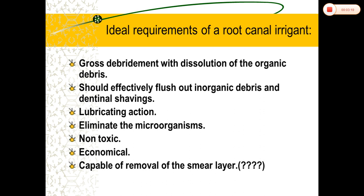It should be easy to use and have an adequate shelf life for storage, which also contributes to it being economical. In addition, it should be non-toxic and non-caustic to the periodontal tissues, and have little potential to cause any anaphylactic reaction. These are the main ideal and additional requirements to be an efficient root canal irrigant.